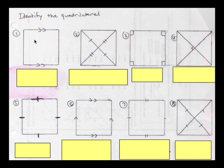So our first example is showing us that we have one pair of parallel sides and that's it. So one pair of parallel sides: trapezoid.